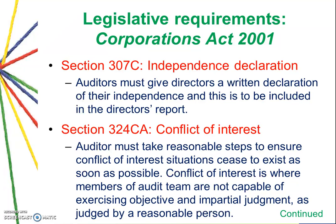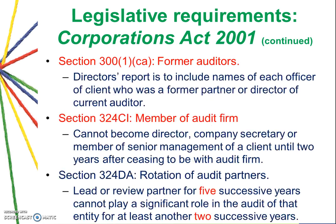For example, in the Corporations Act 2001, Section 307 — the independence declaration — requires the auditor to provide a written declaration of their independence, which is to be included in the audit director's report. Section 324C8 requires the auditor to take reasonable steps to avoid conflicts of interest.